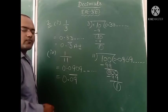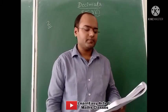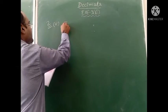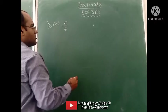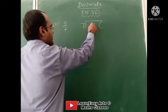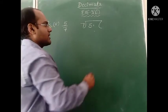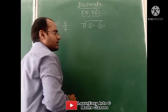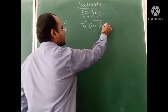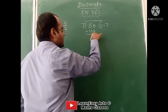So like this we have to do question number 4. Now let's see 5th part: 5 divided by 7. We show the division — 7 outside, 5 inside. 5 is not divisible by 7, so in the answer we take decimal and add 0. 7 times 7 is 49. On subtracting, remainder is 1.